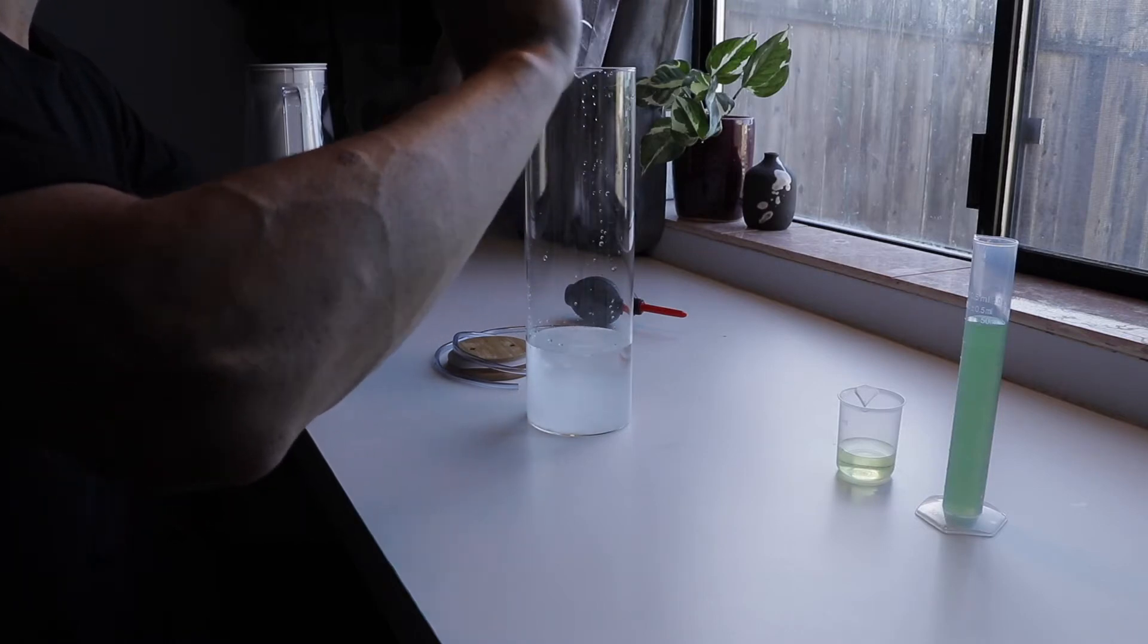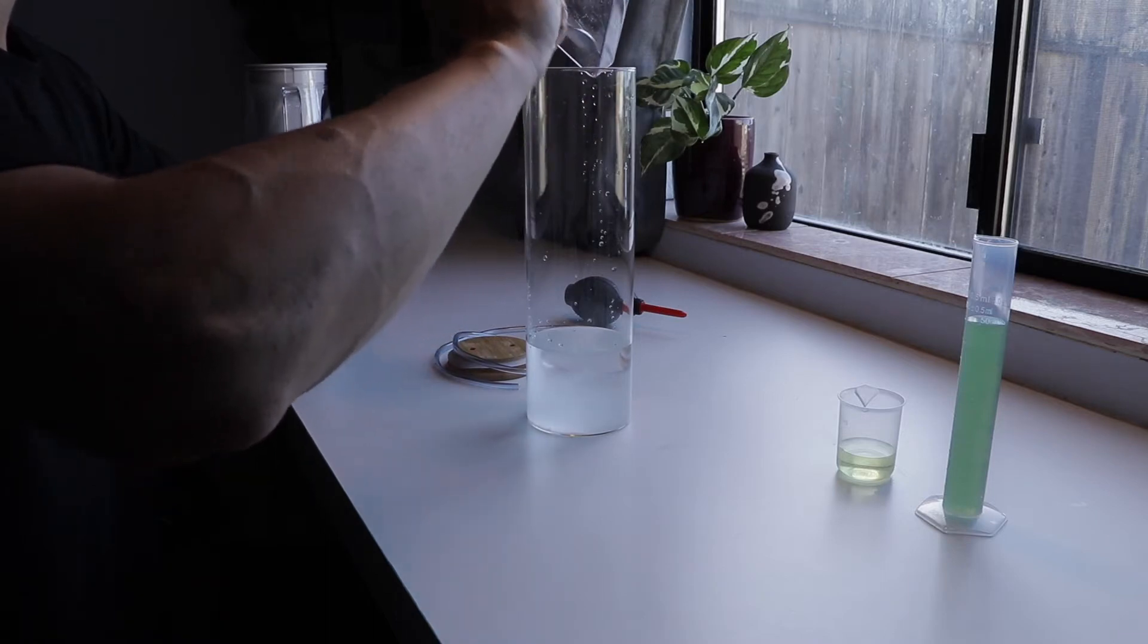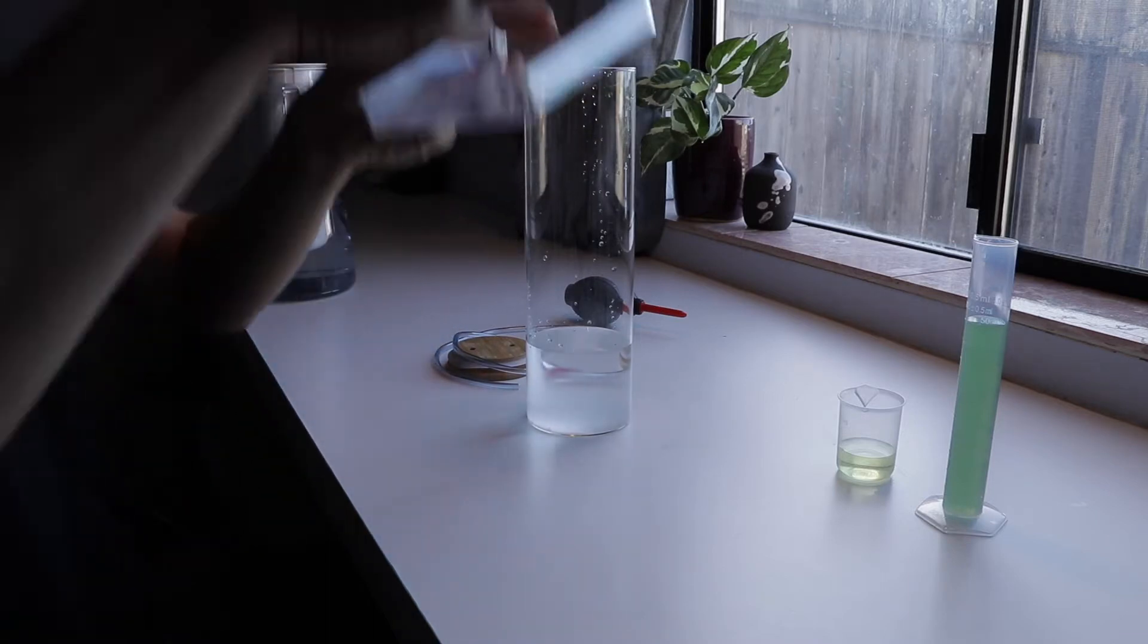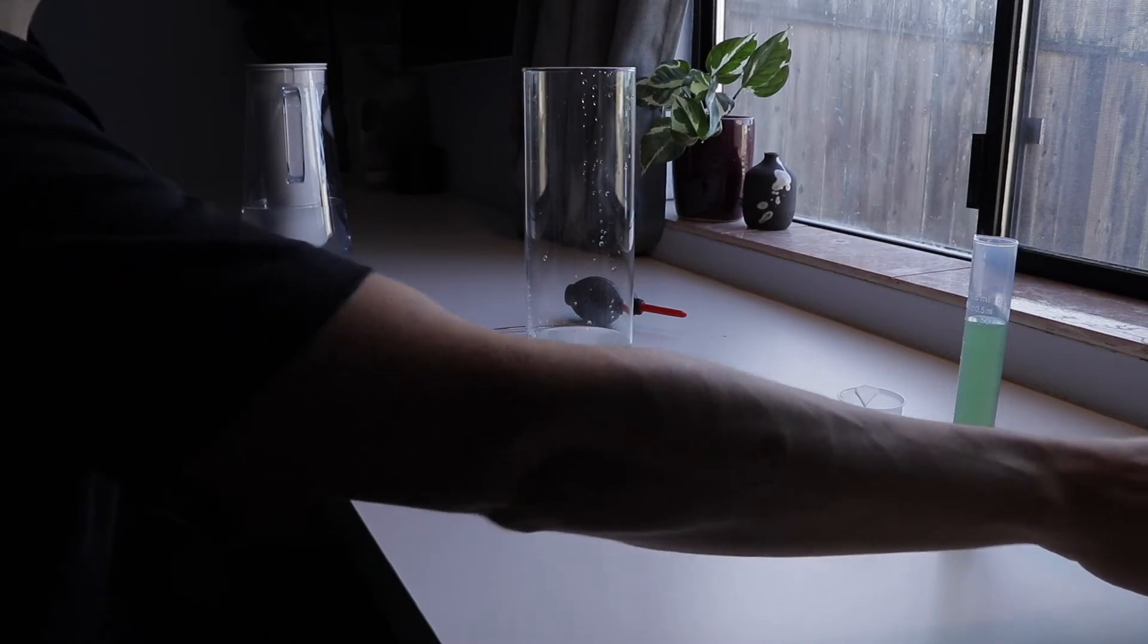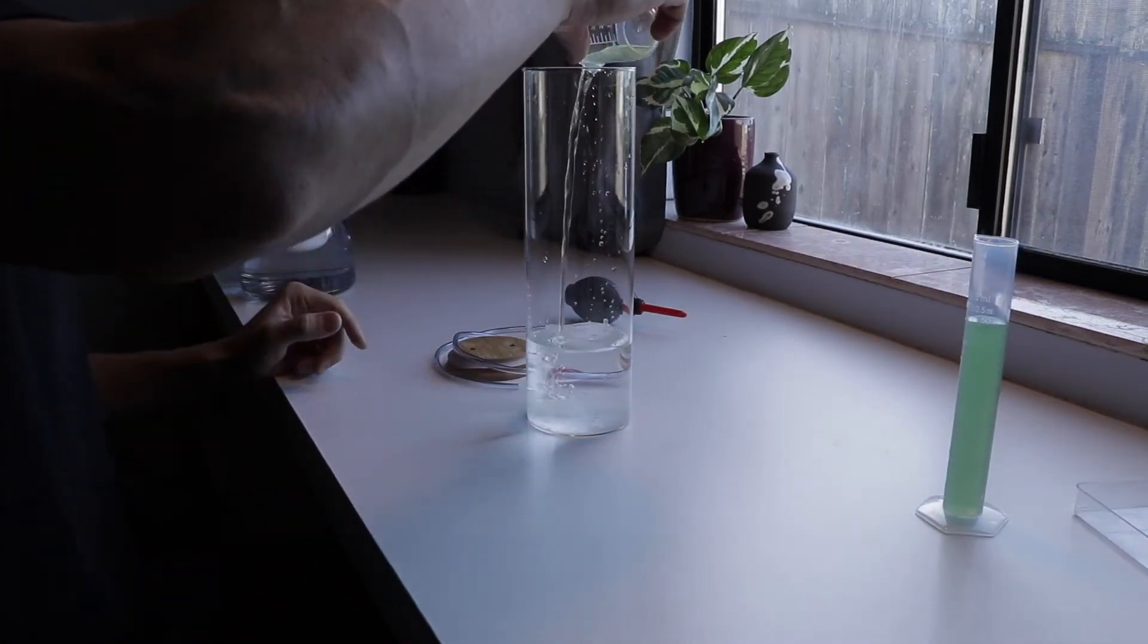Next, clean your container, lid, and hosing with a little bit of dish soap and water and make sure to rinse thoroughly. You want your container to be totally clean of any potential contaminants but also any residual soap because that might kill the algae, so rinse well.